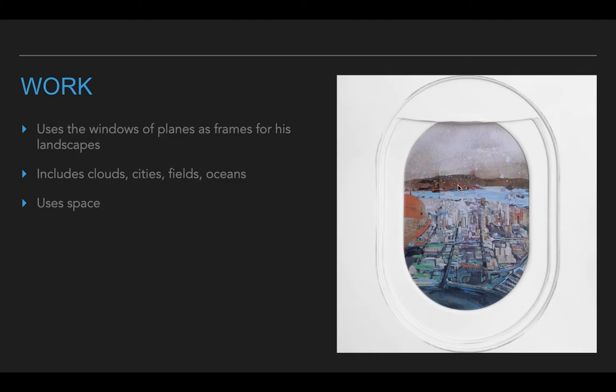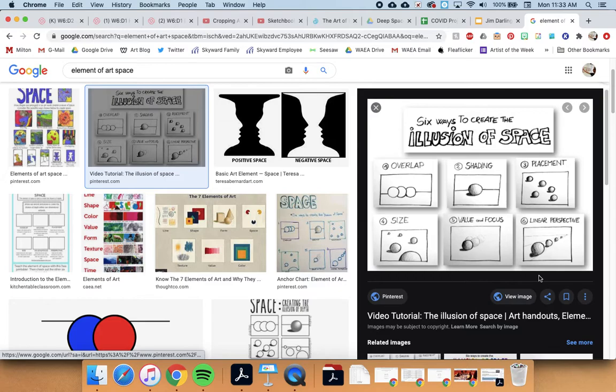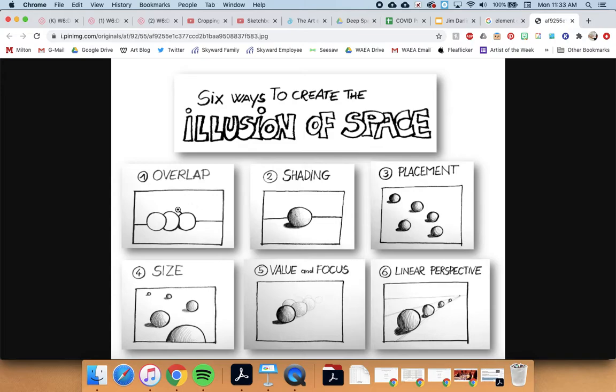One thing I really appreciate about Jim Darling's work is his use of space. Now you might be thinking space — there's not any space in this, Mr. Calvert, I don't see the sun and stars and planets. Space in art is when something is close to us or far away. There are lots of different ways to create the look of space. For example, if you overlap something, that tells somebody that one thing is in front of another. So this circle is in front of this one — it's overlapping — which tells me that this circle is the closest of those three circles.